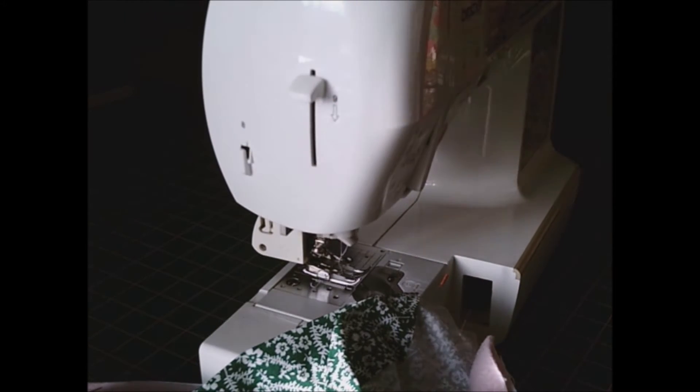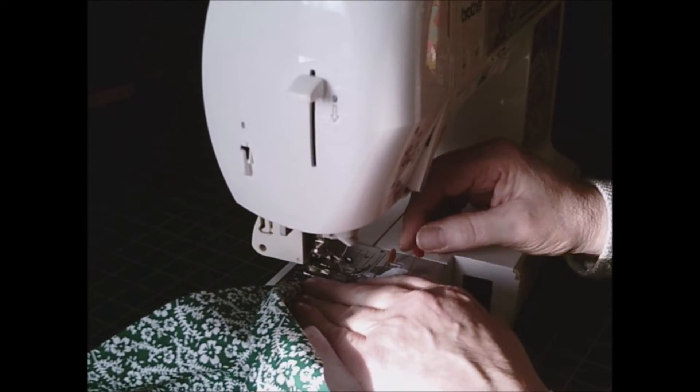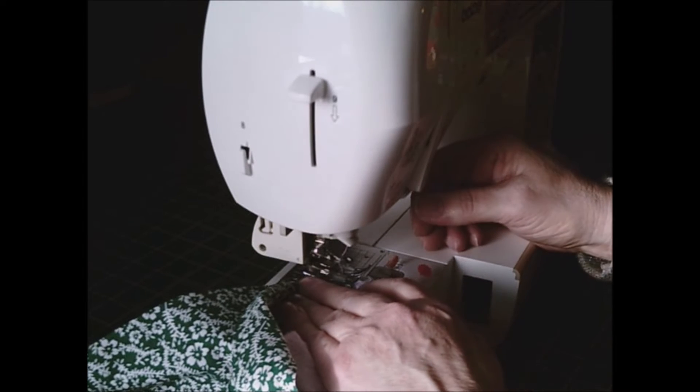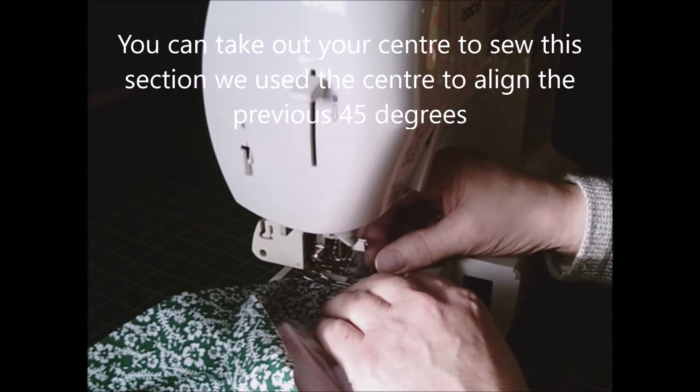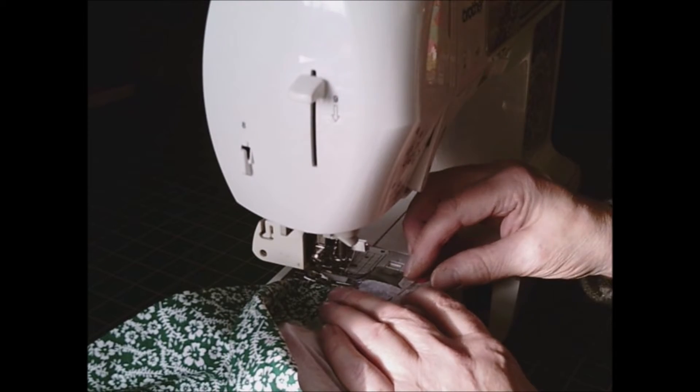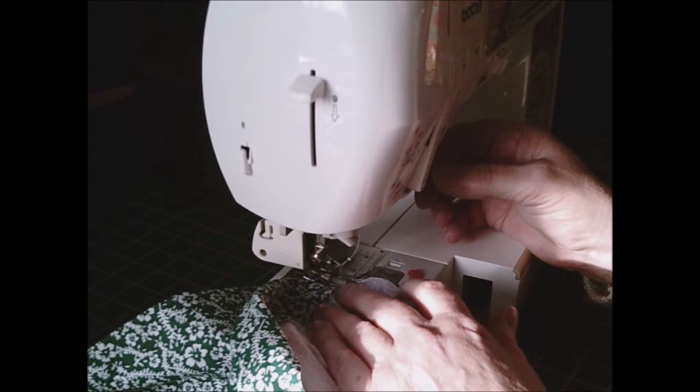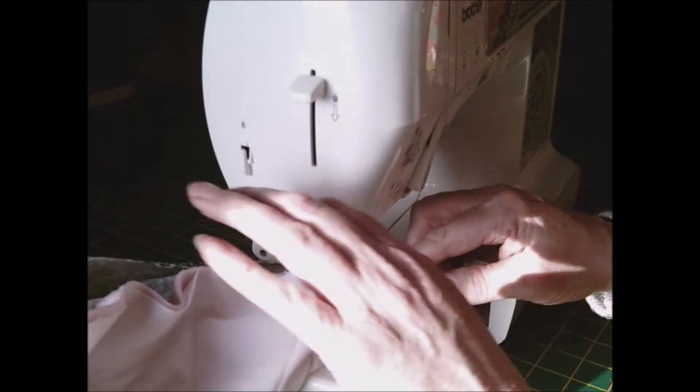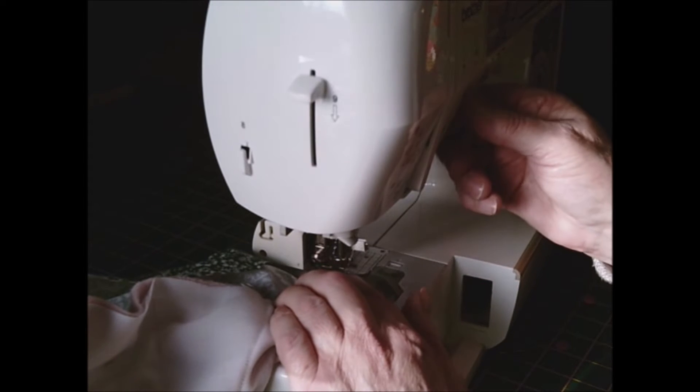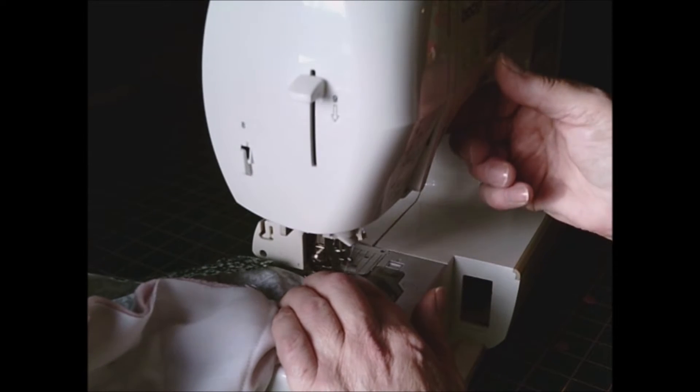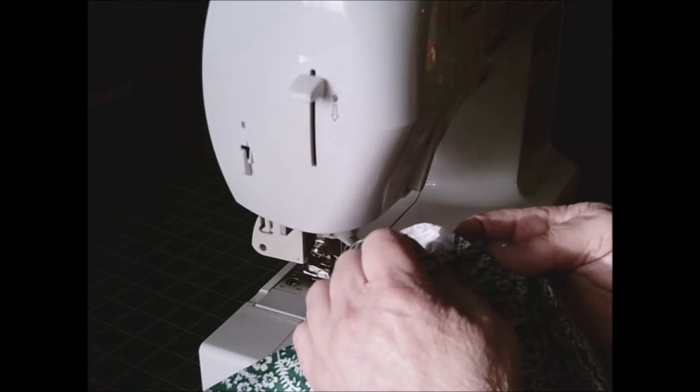What we need to do now is sew a quarter of an inch down that 45-degree angle. You could change from your walking foot to a quarter of an inch foot. I think I've got the right measurement. Make sure you go back and forwards, and that's what it should look like.